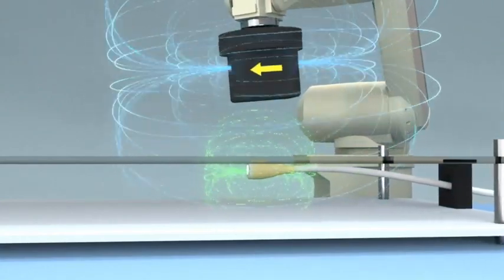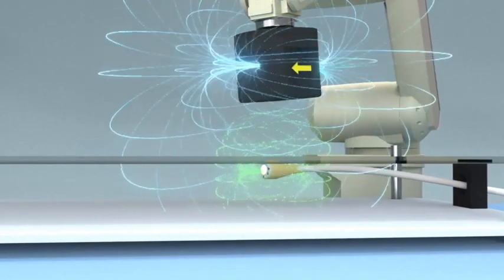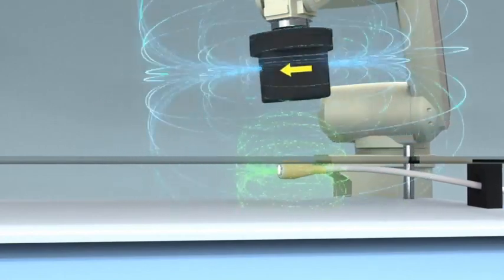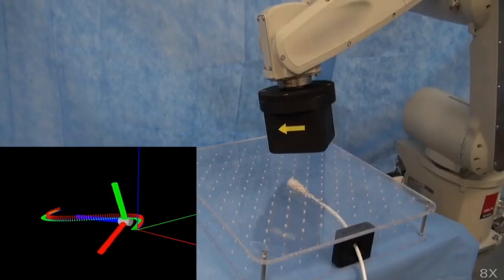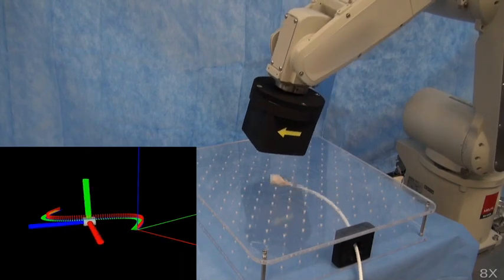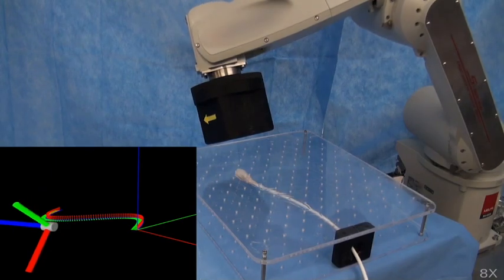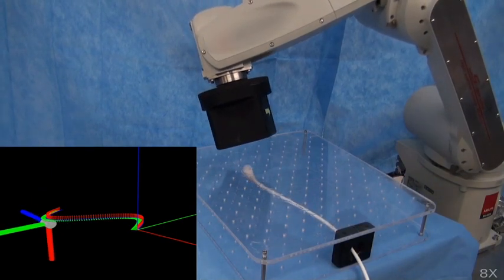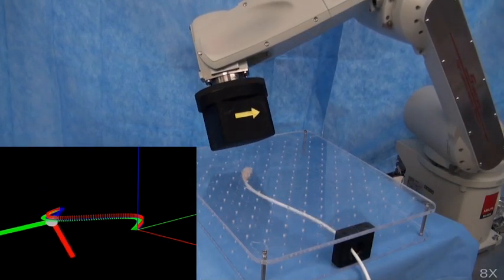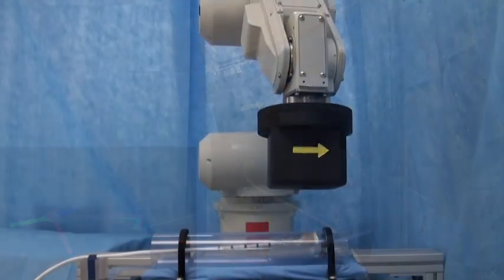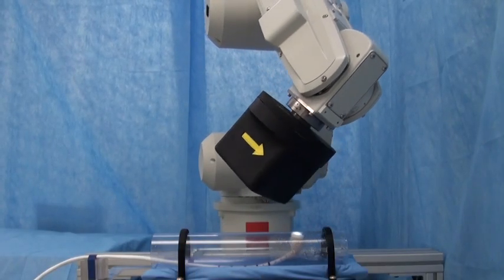Knowledge of the pose of the external permanent magnet and actuating magnet allow for estimating the applied magnetic force and torque. Thus, we are able to compute the motions of the actuating magnet that are necessary to induce a desired force and torque upon the endoscope's tip to produce a desired endoscope motion.